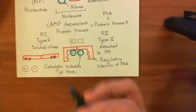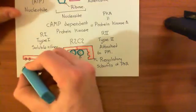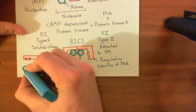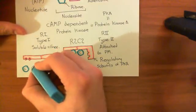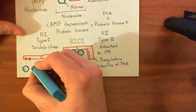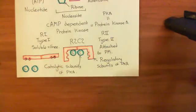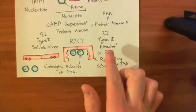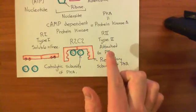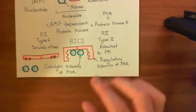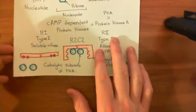So those are the two different types of protein kinase A. Type 2 protein kinase A is going to be important in the desensitization of the beta-2 adrenergic receptor. Now let's introduce these complexes which type 2 protein kinase A binds to at the membrane.